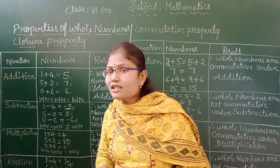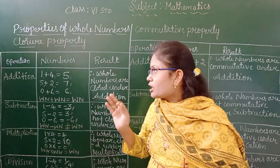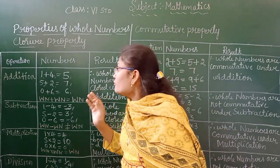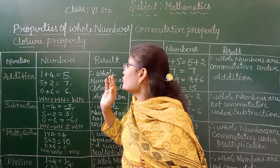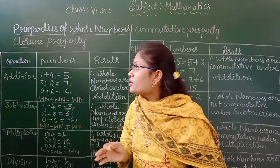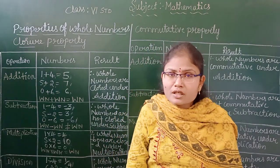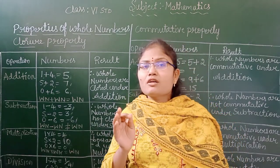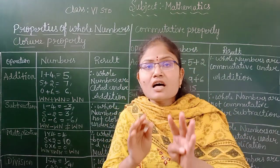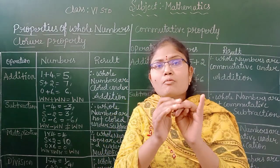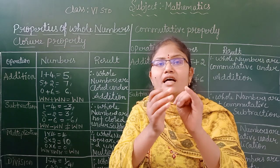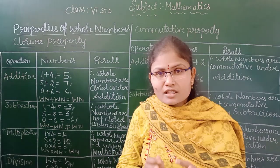In the closure property, what happens if you perform a fundamental operation between any two whole numbers? The fundamental operations are addition, subtraction, multiplication, and division.